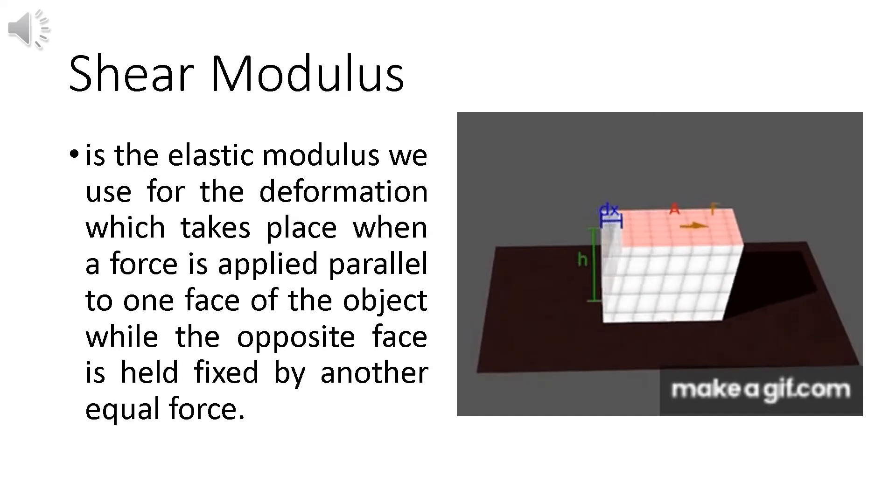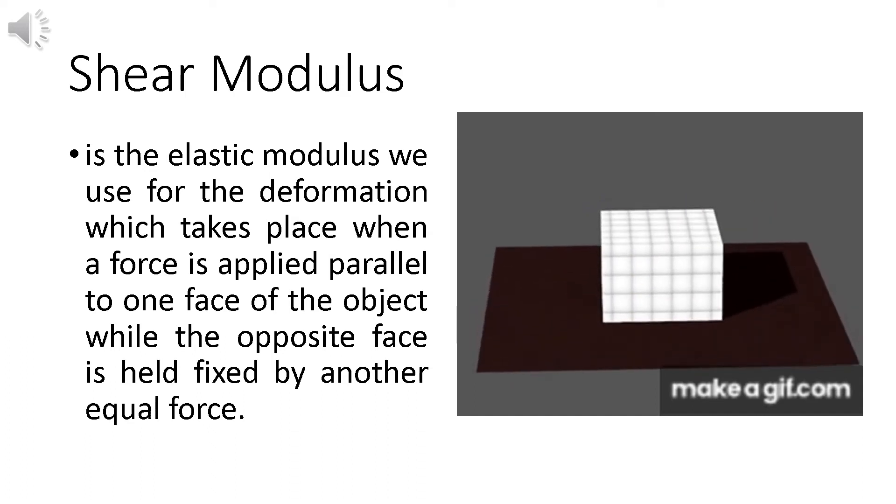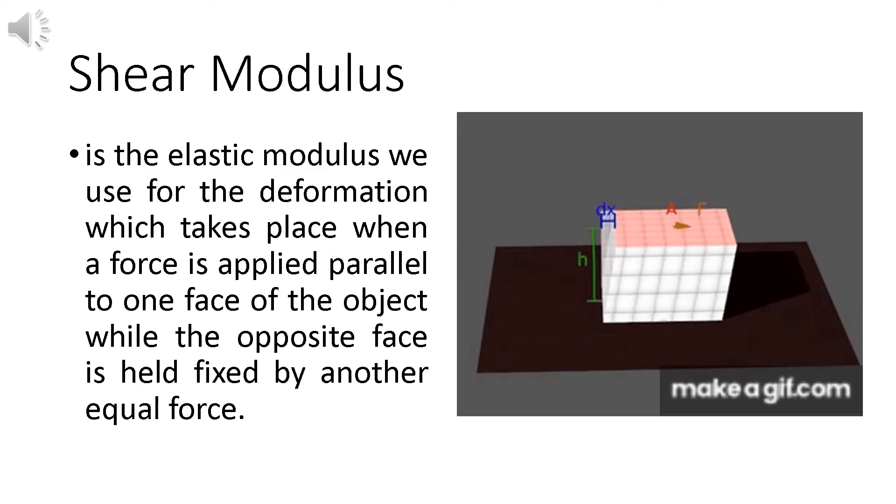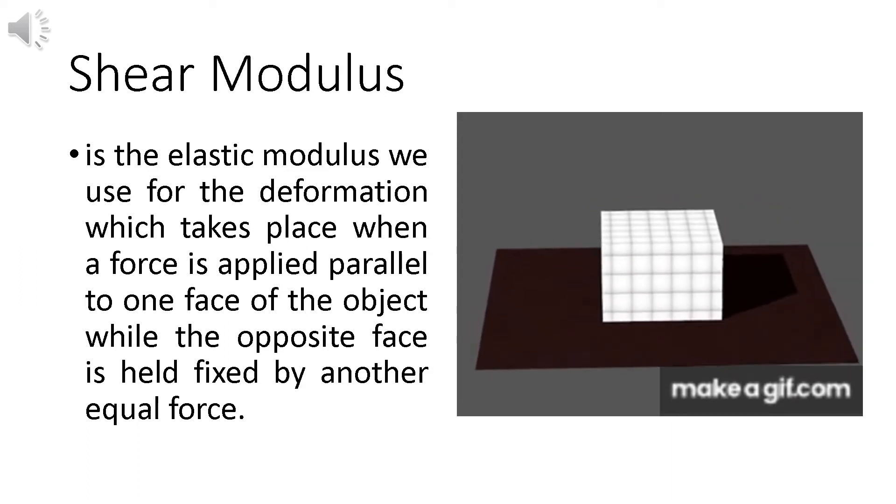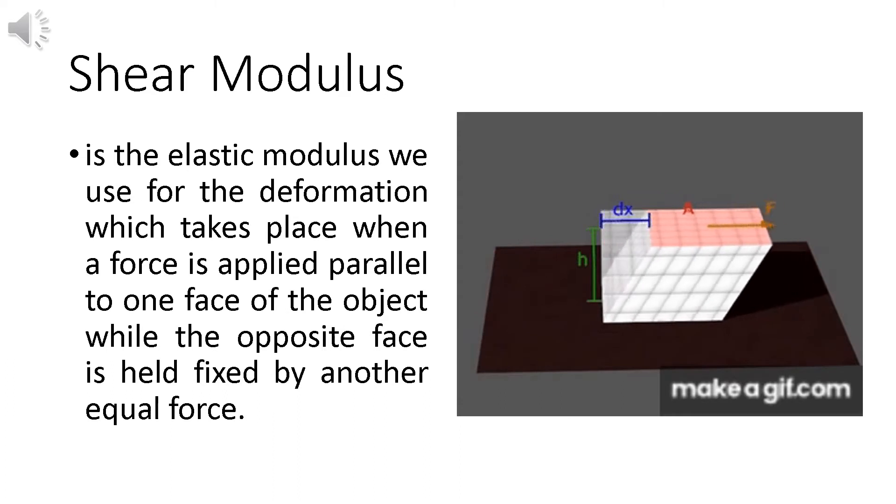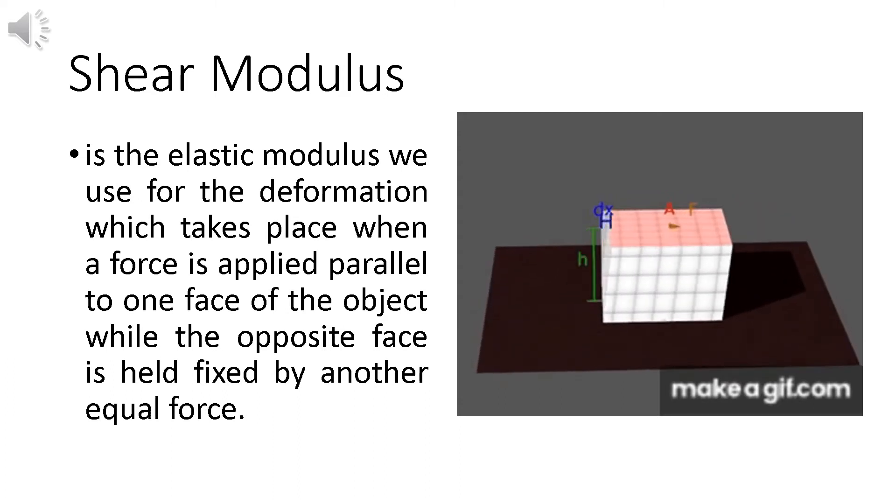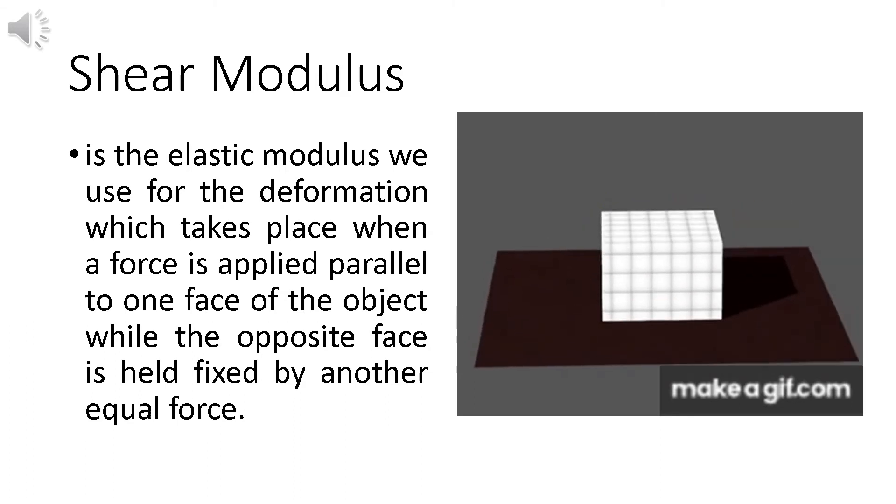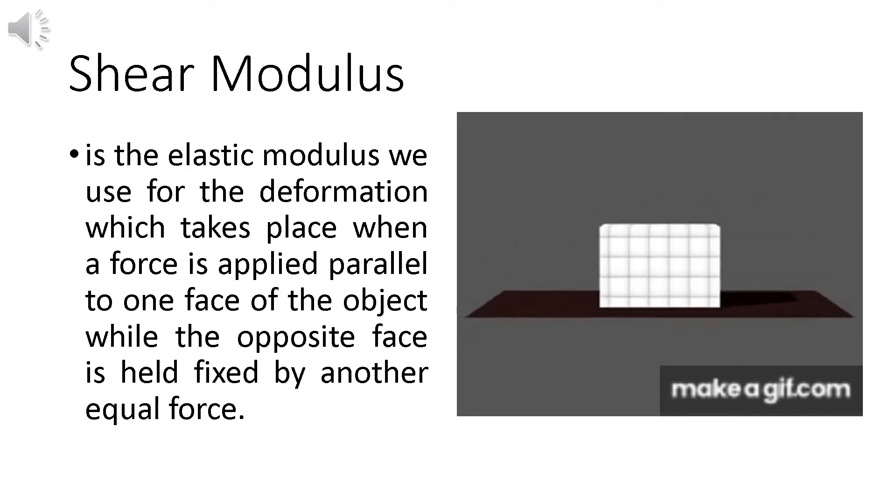As you could see here in the GIF, kapag tinulak yung isang portion ng object, kagaya dito, tinulak yung upper portion ng box. So nakakaroon ng slight deformation. From its original position, nakakaroon ng change of displacement and napupunta siya sa another position. So ayun yung delta X natin.